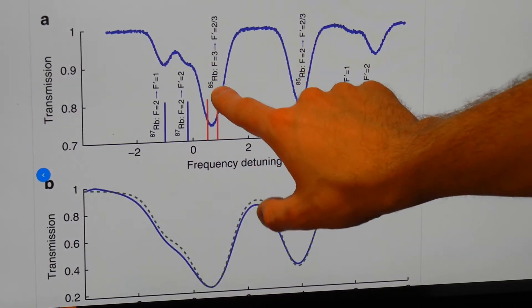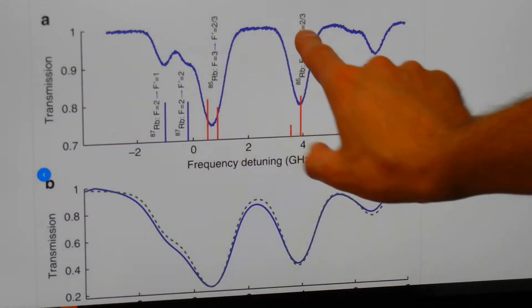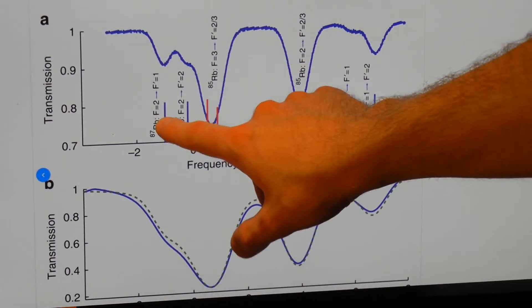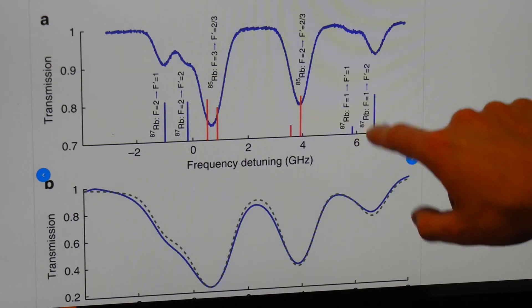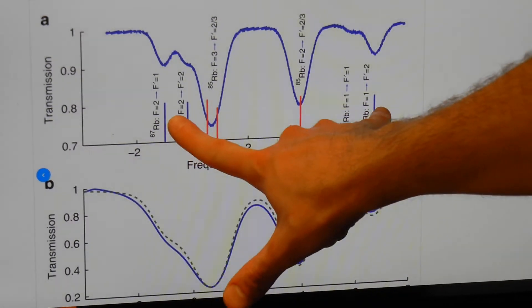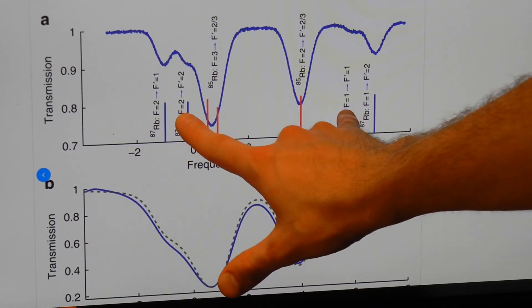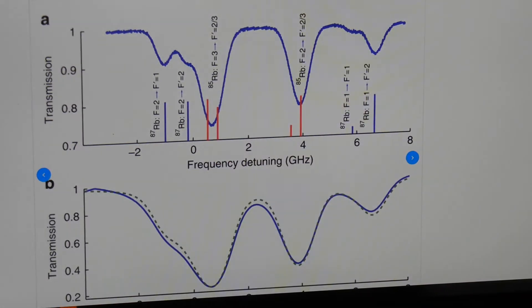This is, for Rubidium-85, the F3 and F2 transition, and then the F2 to F1, F1, F2 for Rubidium-87 are here, and the F2 to F2, F1, F1 transitions there.